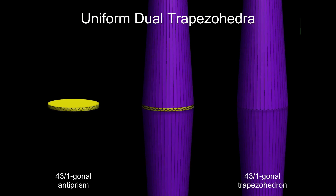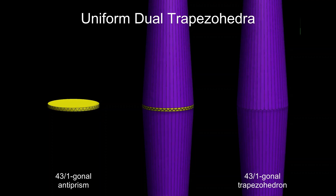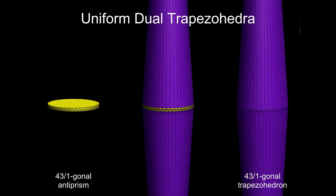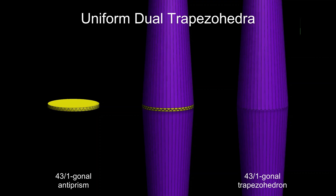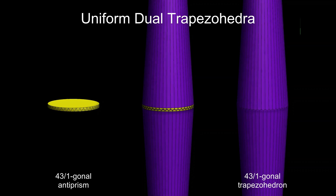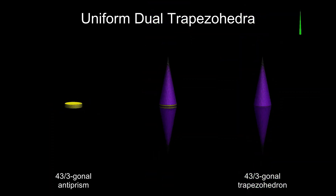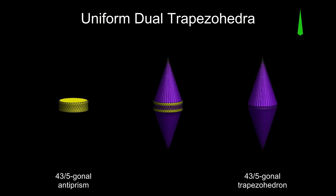Let's look at a sequence of trapezohedra with a large number of sides as the density increases. The antiprism is on the left, the dual trapezohedron on the right, and the two together in dual position in the centre. The trapezohedron face shape is in green at the top right. 43/1 is the convex antiprism, and the trapezohedron is too tall to fit on the screen — the face is so thin it can hardly be seen. As the density increases, the trapezohedron shortens and develops a band across the centre, and the face shape also shortens.